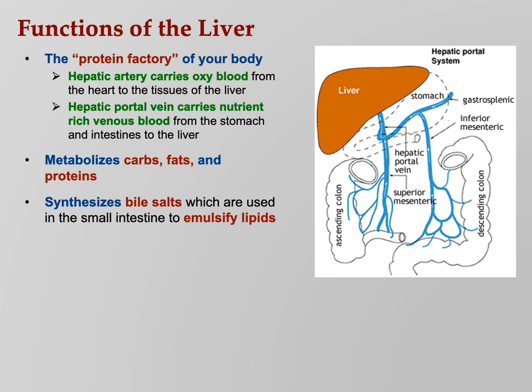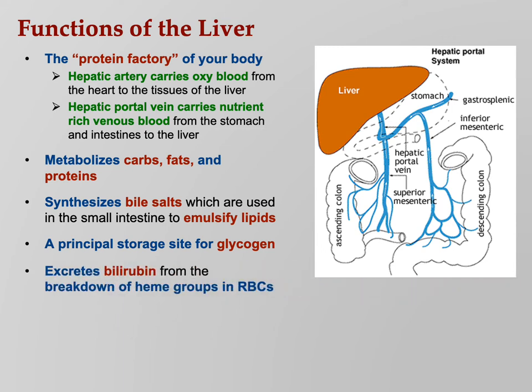The liver makes bile, which emulsifies lipids. An important distinction: bile doesn't digest fats, it simply emulsifies them. Digesting a triglyceride means breaking glycerol apart from the fatty acids — bile doesn't do that, lipases do. Bile takes big chunks of fat and breaks them into smaller chunks; that's emulsification. The liver is also where you store glycogen — roughly 325 grams in skeletal muscles and 125 grams in the liver. The glycogen in your muscles can only be used by that muscle, whereas the glycogen in the liver can be used by your whole body.